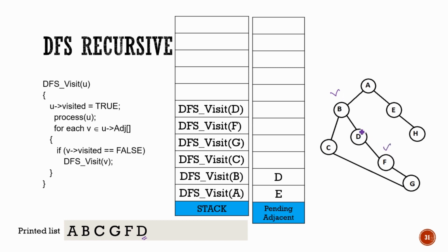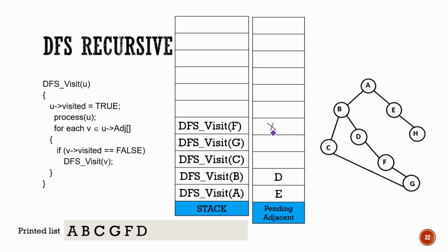Since all the adjacent nodes of D are already visited — we can check from the printed list that B and F are already printed, so they are visited — we will backtrack. We backtrack to DFS F and see there are no unvisited adjacent nodes of F, so we backtrack to G. That list is empty.